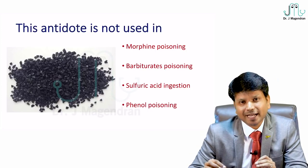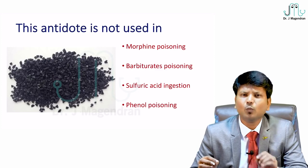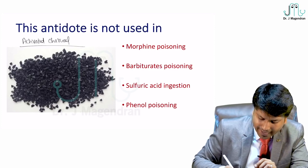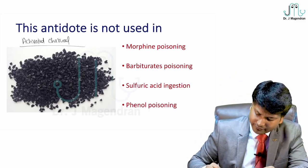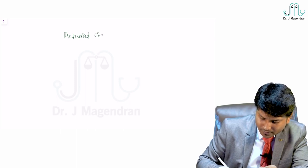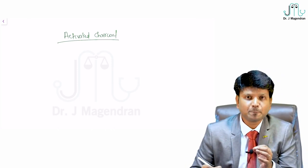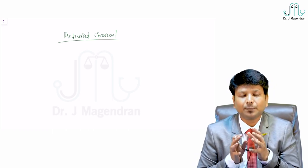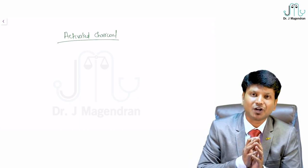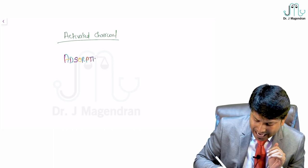Moving on to antidotes: activated charcoal is a physical antidote. It is basically coal/charcoal. When it comes into contact with any poison, the poison binds to the surface of activated charcoal — this property is called adsorption. The dose is around 1 gram per kg body weight. For an adult of 70 kg, you give 70 grams mixed with water. The poison binds with the charcoal and is excreted in stools, preventing absorption into the circulation — this is decontamination.